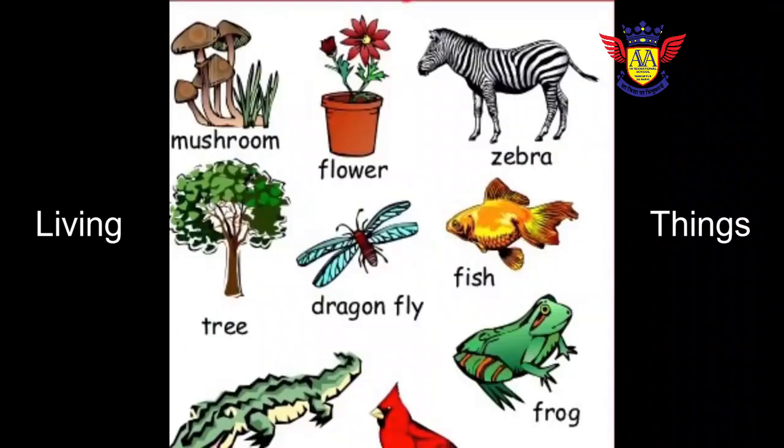Living things. Natural things like humans, plants, and animals that have life are called living things. We can say that all living things are natural things.